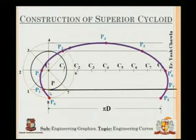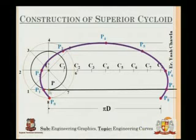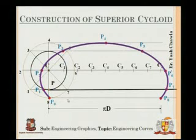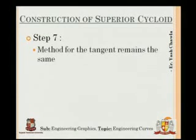I'll join all the points p1 through p8 to get the superior cycloid. You can visualize the difference: in a simple cycloid this was the initial and final point of generation on the directing line, but now you can see the curve has moved outside the directing line — beyond it — for a superior cycloid. Now, if I ask what would an inferior cycloid be: superior was outside the circle, so inferior would be inside the circle.